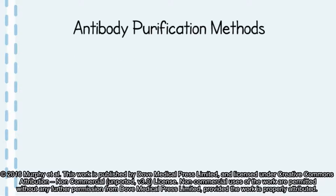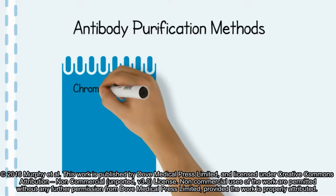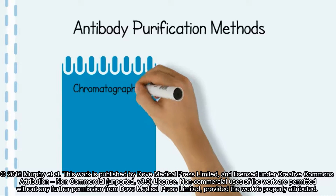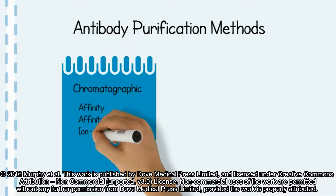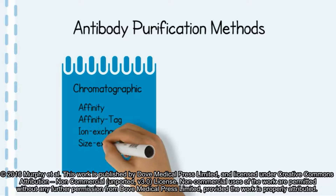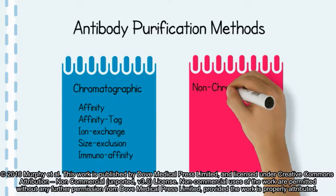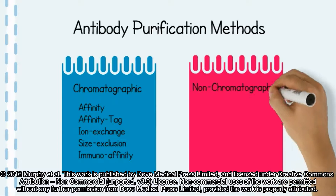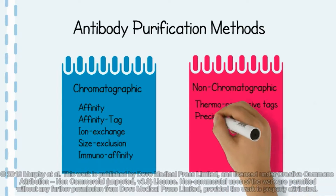There are two main methods of antibody purification. Firstly, chromatographic-based methods that include affinity, affinity tag, ion exchange, size exclusion and immunoaffinity chromatography, and secondly non-chromatographic methods that include the use of thermoresponsive tags.